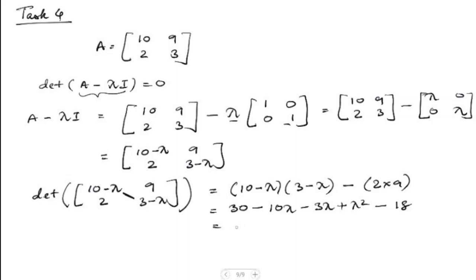Simplifying: minus 10 lambda minus 3 lambda is minus 13 lambda, and 30 minus 18 is 12. So the characteristic polynomial is lambda squared minus 13 lambda plus 12, and if we equate it to 0, this is a quadratic equation. We can solve it using the quadratic formula to get the values of lambda 1 and lambda 2.